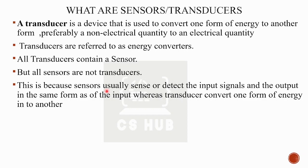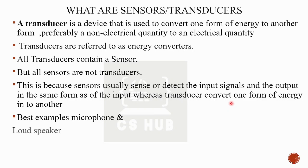All transducers contain a sensor, but all sensors are not transducers. This is because sensors usually sense or detect the input signal and output it in the same form as the input. Whereas the transducer converts one form of energy into another. The best examples of a transducer are microphone and loudspeaker — the microphone converts sound to electrical signal, and the loudspeaker converts electrical signal back to sound.